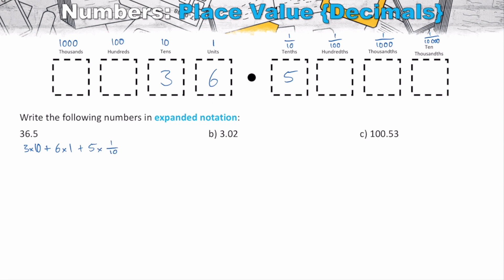Now of course, three lots of our tens are going to be thirty. Six lots of our one is going to be six. And five lots of our tenths is going to be five tenths. So we add 5/10. And what we've now got is our number represented in expanded notation. Now yes, my expanded notation does have fractions with it. But it's really, really good to get used to that as well.